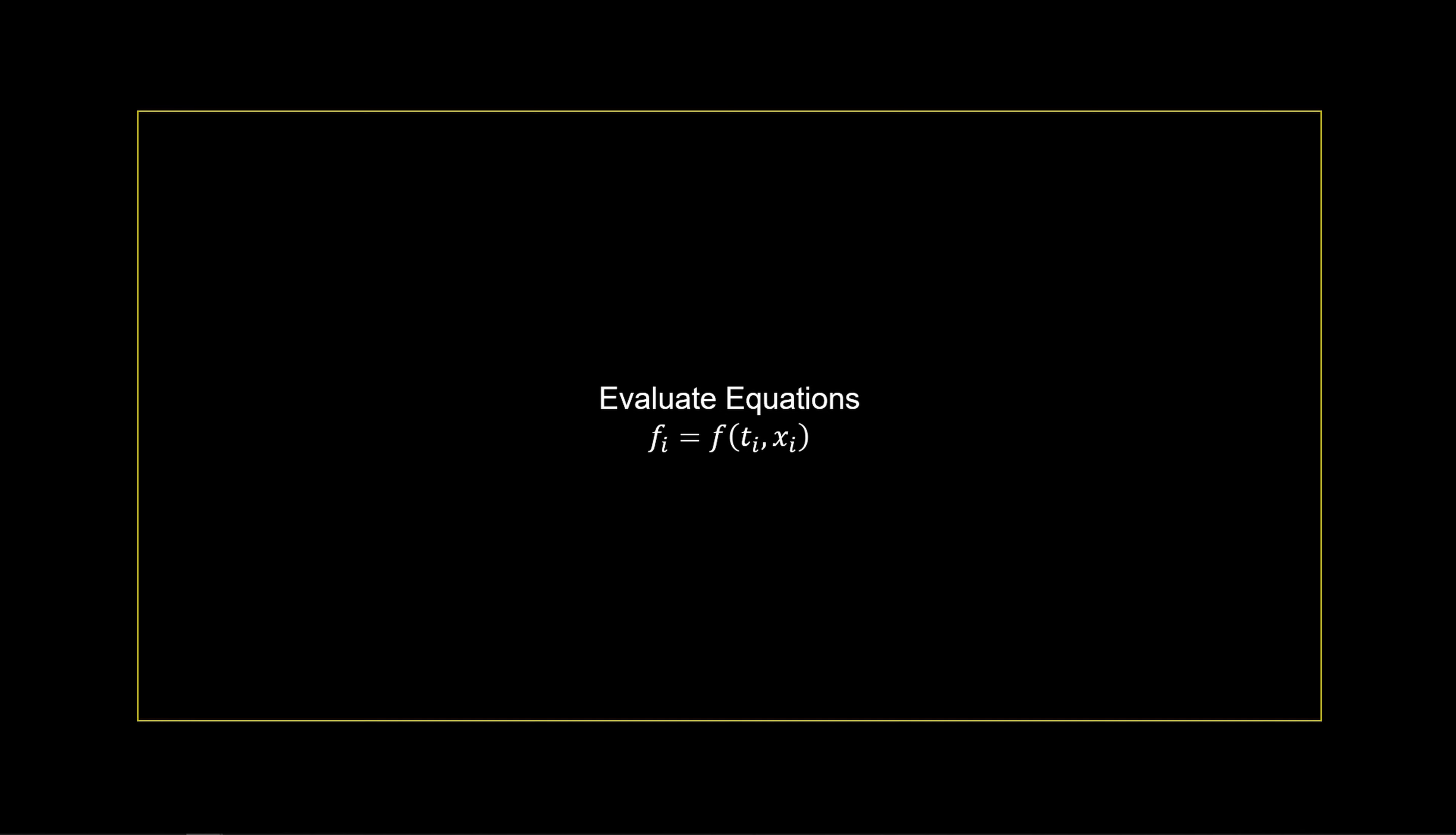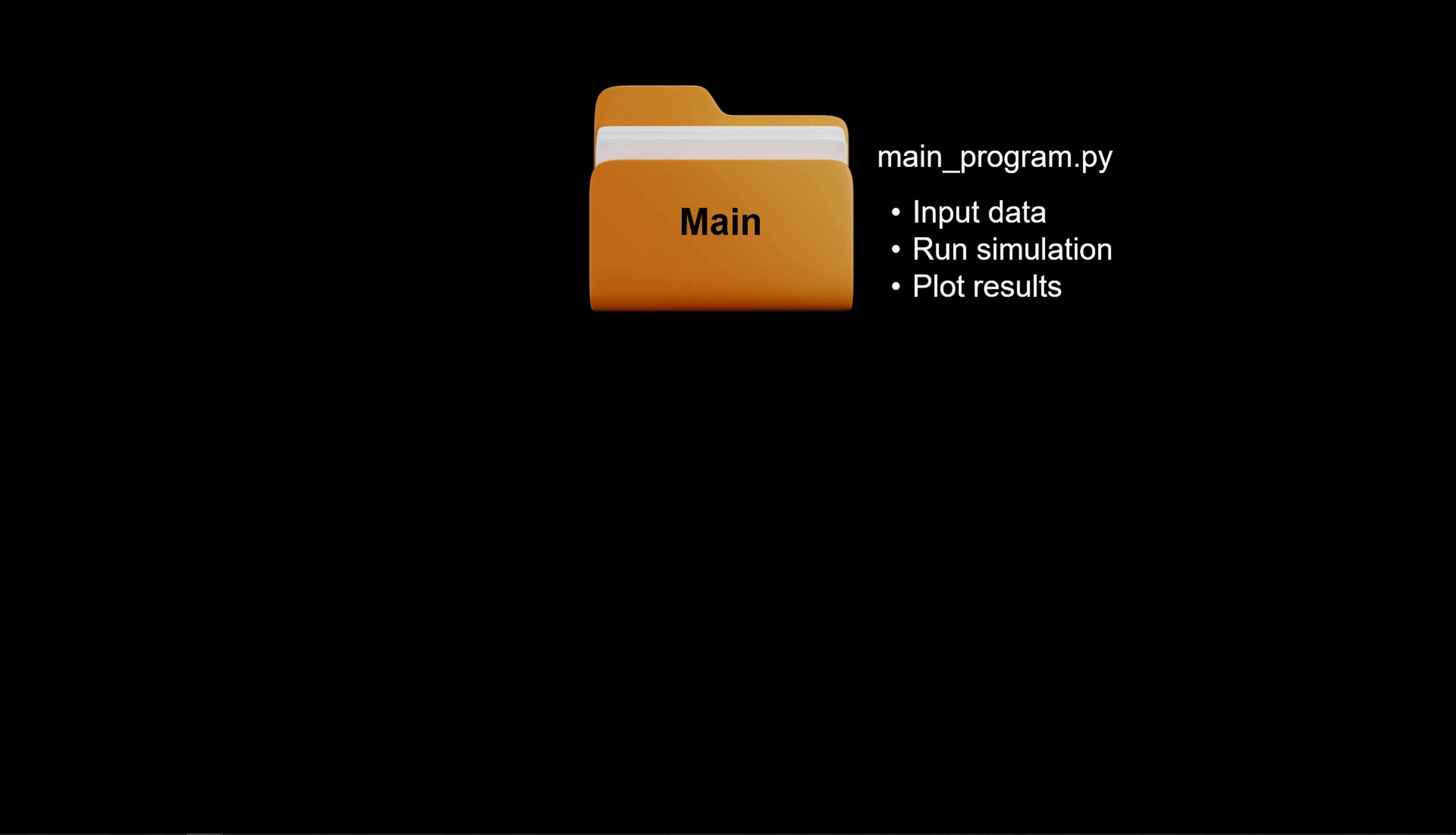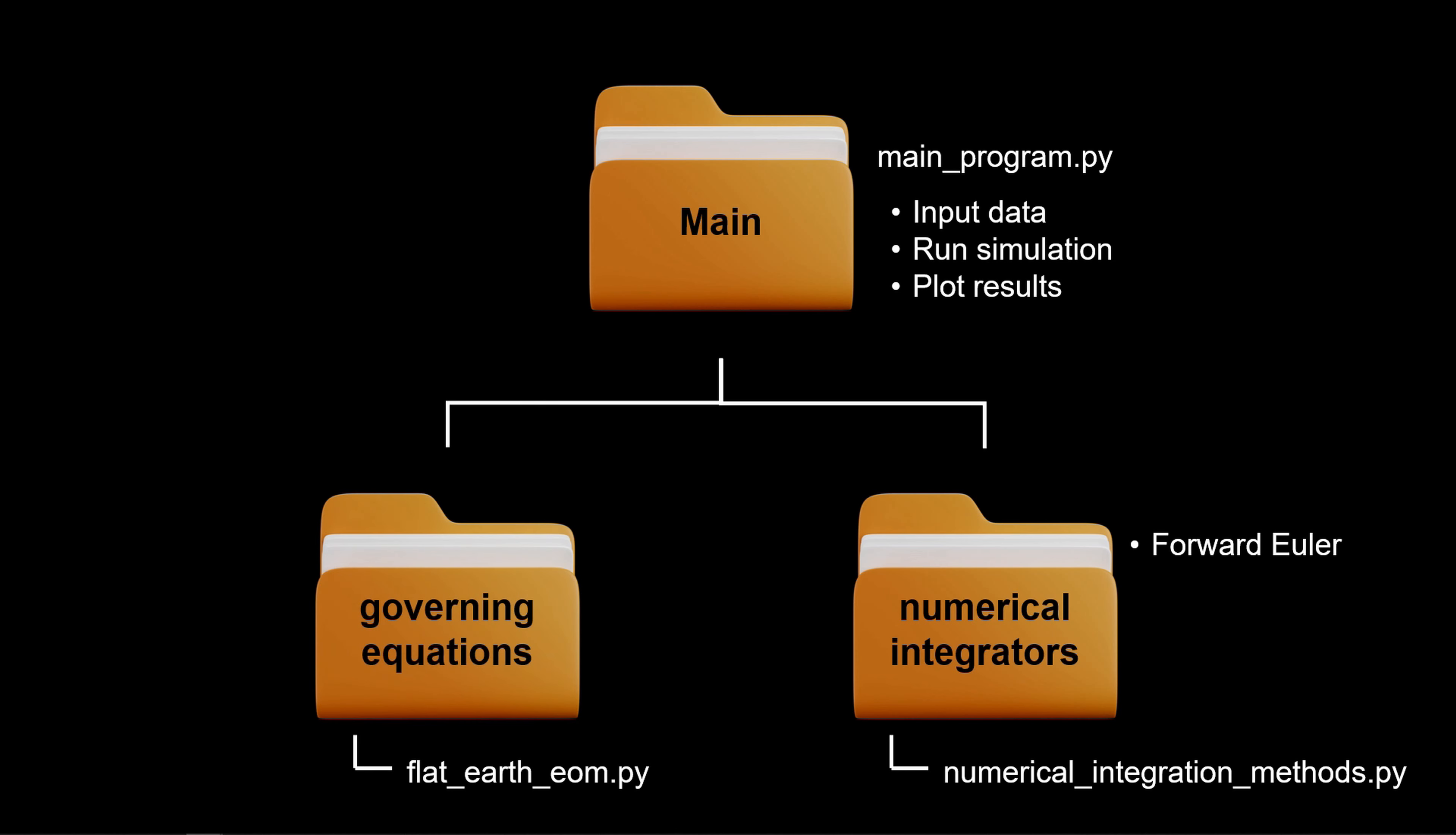Now that we've added the kinematic equations to the equations of motion, we have a total of nine states. These are the translational and rotational six-degree-of-freedom equations previously covered and the three Euler kinematic equations. The codes from the last lesson remain intact with the main program file as the driver, a forward Euler numerical integration method, and the governing equations, now containing a total of nine degrees of freedom in the script Flat Earth EOM. Let's start by inspecting the driver.